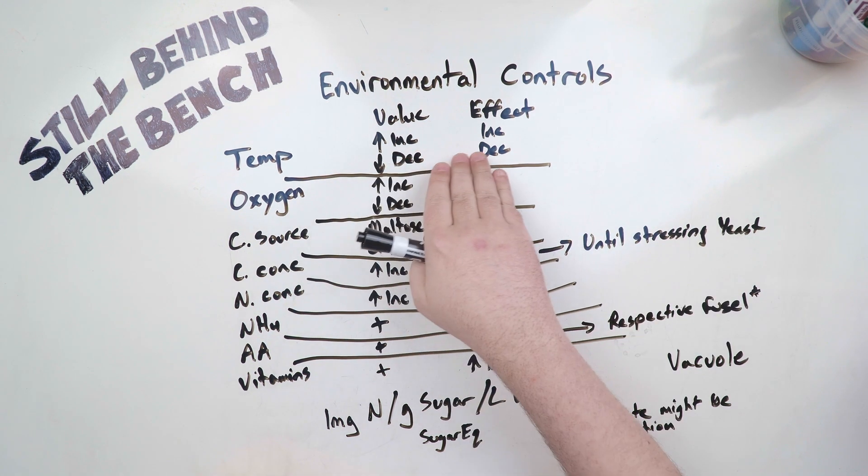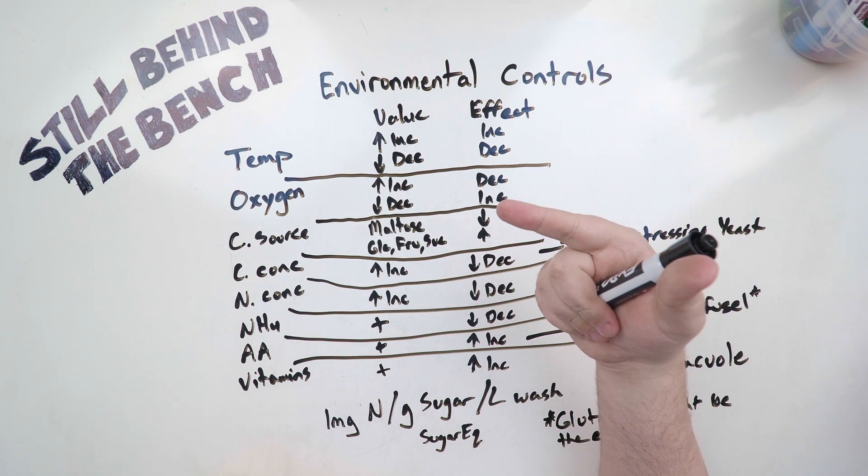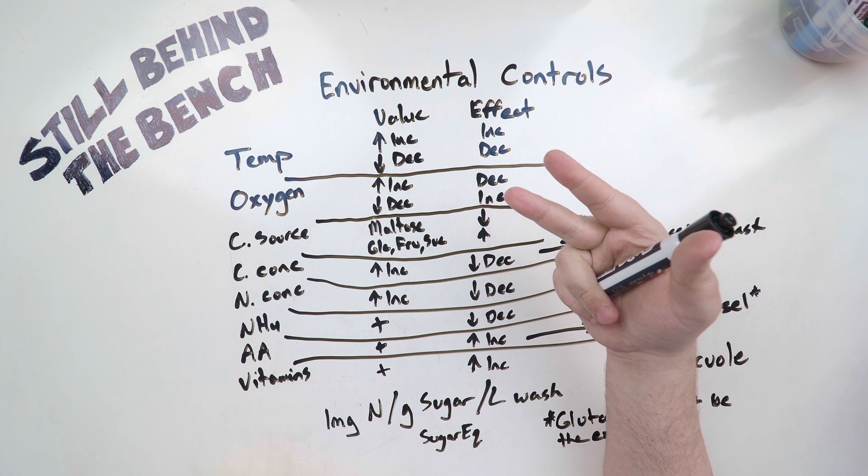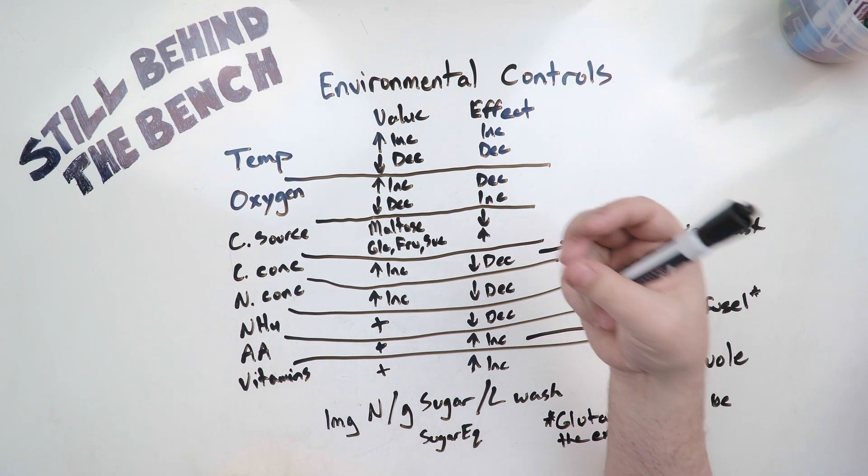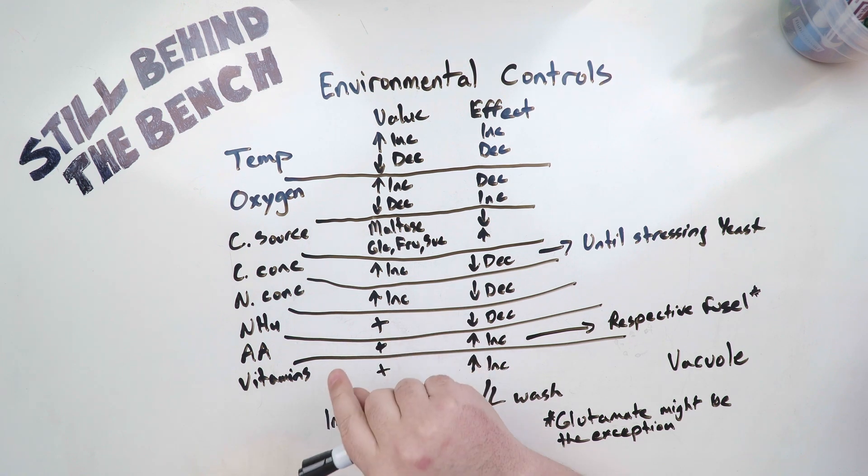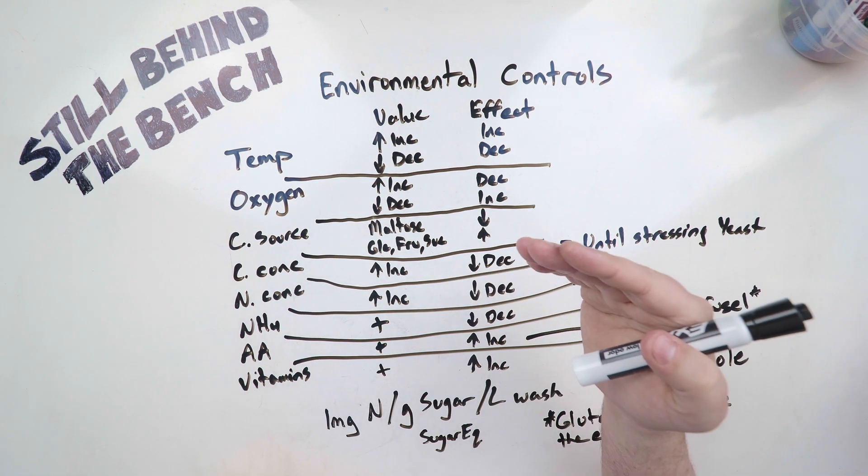So keep it in the right temperature, keep it in the right pH, the adequate amount of minerals and vitamins, sufficient carbohydrates, preferably maltose over the others, the right amount of nitrogen in the right form, also added at the right time - type depending - you'll be promoting growth and you will be increasing the amount of fusel.